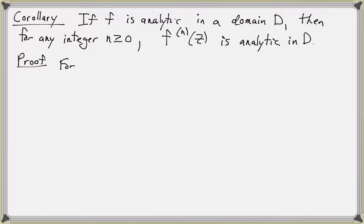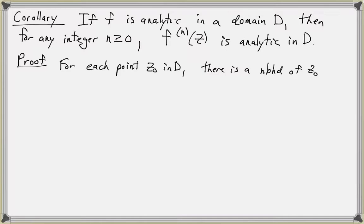We can let Z0 be any point in D. Then we can find an epsilon neighborhood around Z0 throughout which F is analytic. So there is a neighborhood of Z0, written as the set where the absolute value of Z minus Z0 is less than epsilon, throughout which F is analytic.